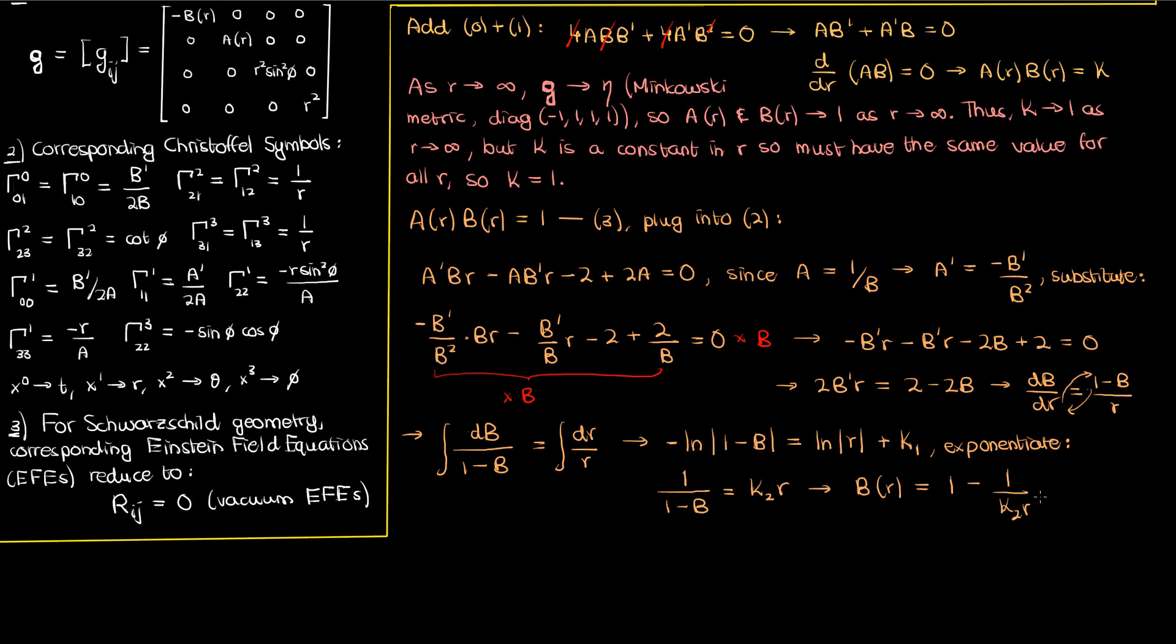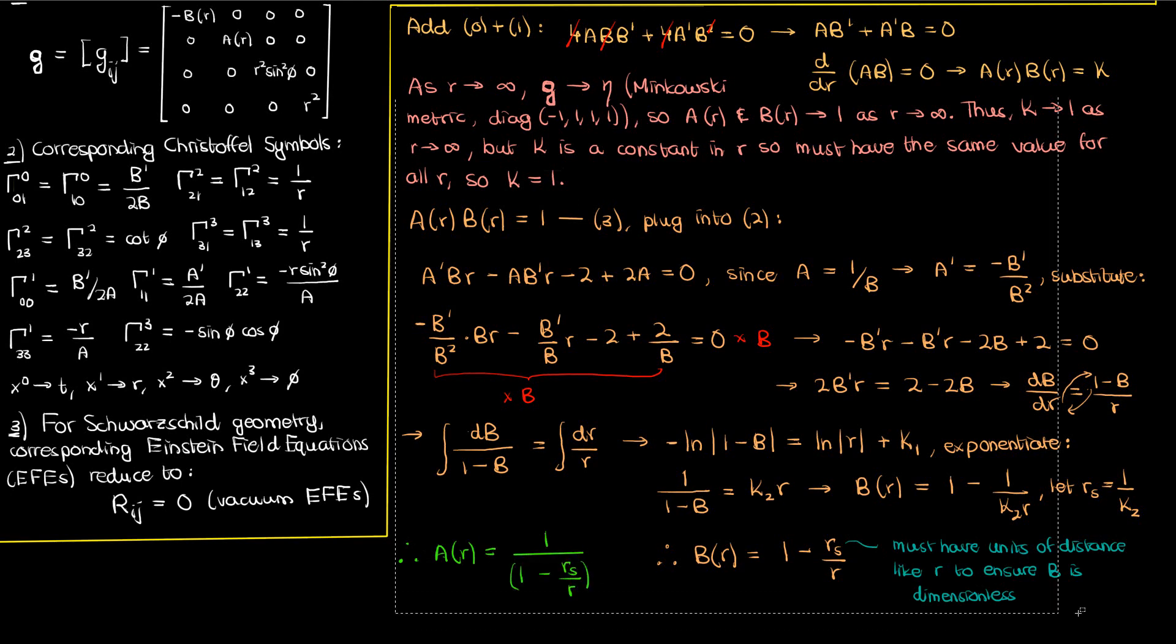Now 1/K2 can be another constant which I'll call R_S, so I have 1 minus R_S/R as the solution for B(R). The reason I've called the constant R_S is that B must be dimensionless as a component in this metric tensor. So the R_S should have units of distance just like the R coordinate in order to give us a dimensionless quantity. Now since A is 1 over B, that means A is just the inverse of all this, so 1 over (1 minus R_S/R).